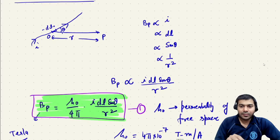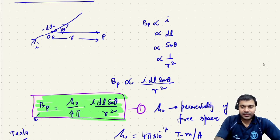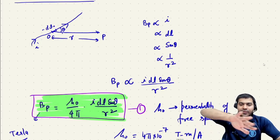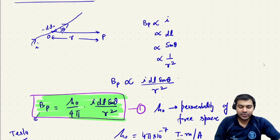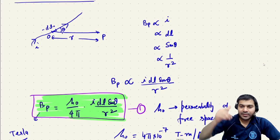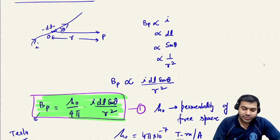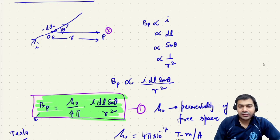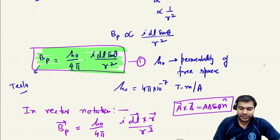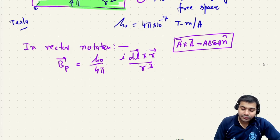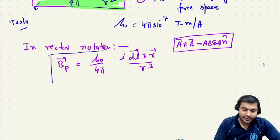To find the direction of the magnetic field, we curl our right-hand fingers from dL to r, and our thumb represents the direction of the magnetic field. For example, if dL and r are both in the plane of the paper and I curl my right-hand fingers from L to r, the magnetic field at point P is perpendicularly inward, represented by the cross symbol. That is the vector form of the magnetic field at point P.